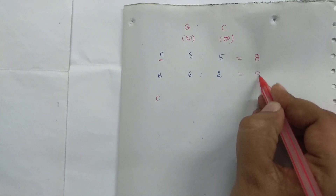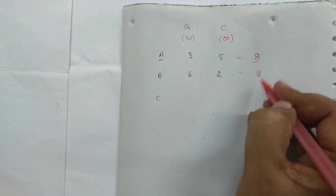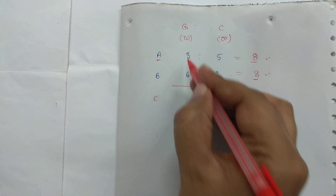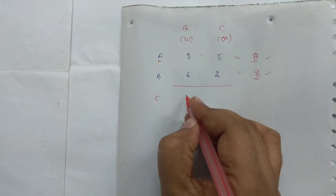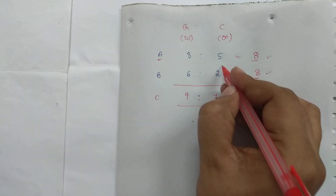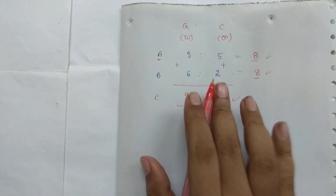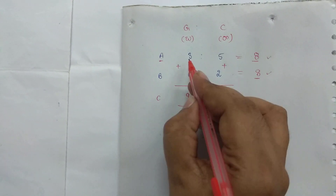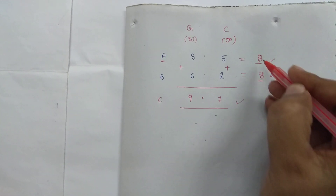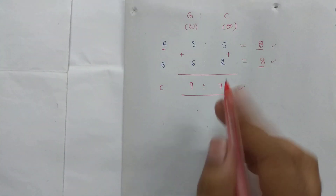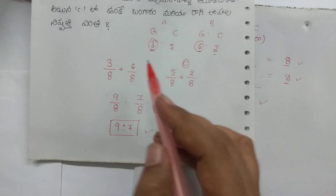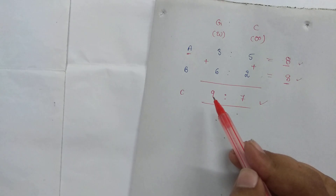6 plus 8. If you choose the same method, just add: 6 plus 3 is 9, and 5 plus 2 is 7. So the direct answer is correct. If you want to verify: 3 plus 5 is 8, and 6 plus 2 is 8. The direct answer gives 9 is to 7.